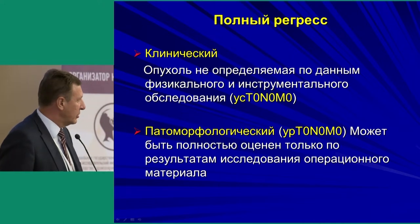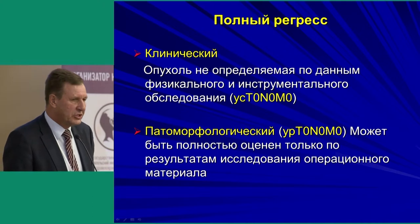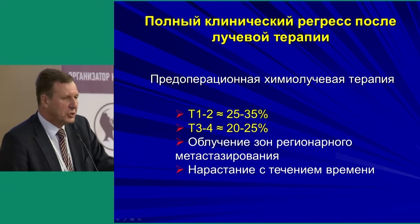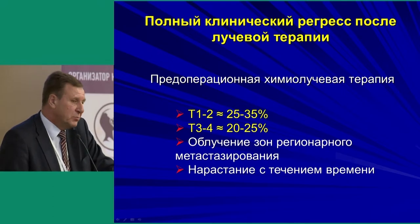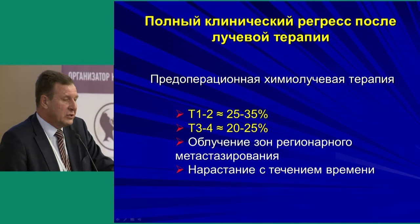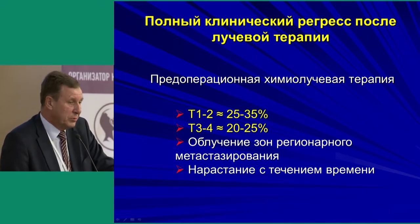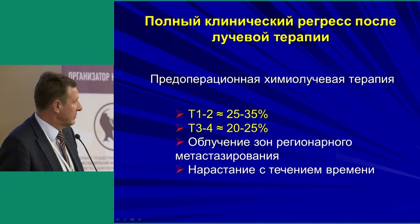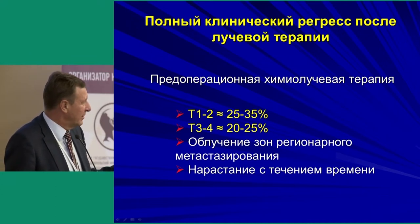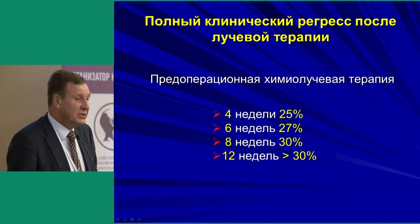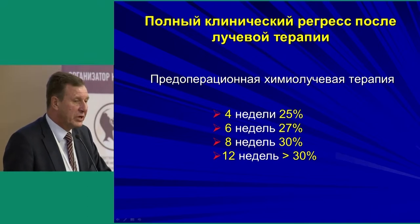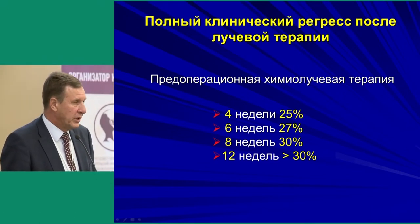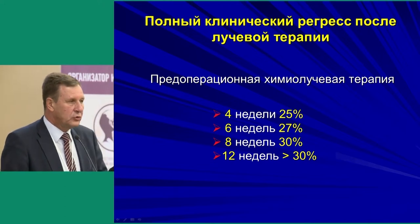If tumor growth reappears within 12 months, there was no complete clinical regression, and we should review where our diagnostic assessment failed. According to study data, complete clinical regression is seen in 25–35% of T1–T2 tumors with pre-op chemo-radiation. The irradiated zone of regional metastasis also regresses with time: at 4 weeks we see only 25% of cases achieving complete regression, but after 12 weeks more than 30% of cases show complete clinical regression. Therefore we should not rush to perform MRI in the short term post chemo-radiation, as you will not see the true result and may see overstaging.